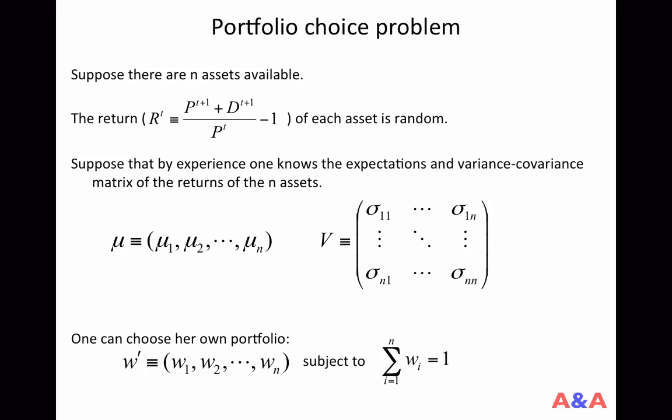So your portfolio advisor gives you the expected return vector, mu, which is a vector of N numbers. The first number corresponds to the expected return of the first asset and the second number corresponds to the expected return of the second asset and so on, up to the Nth asset.